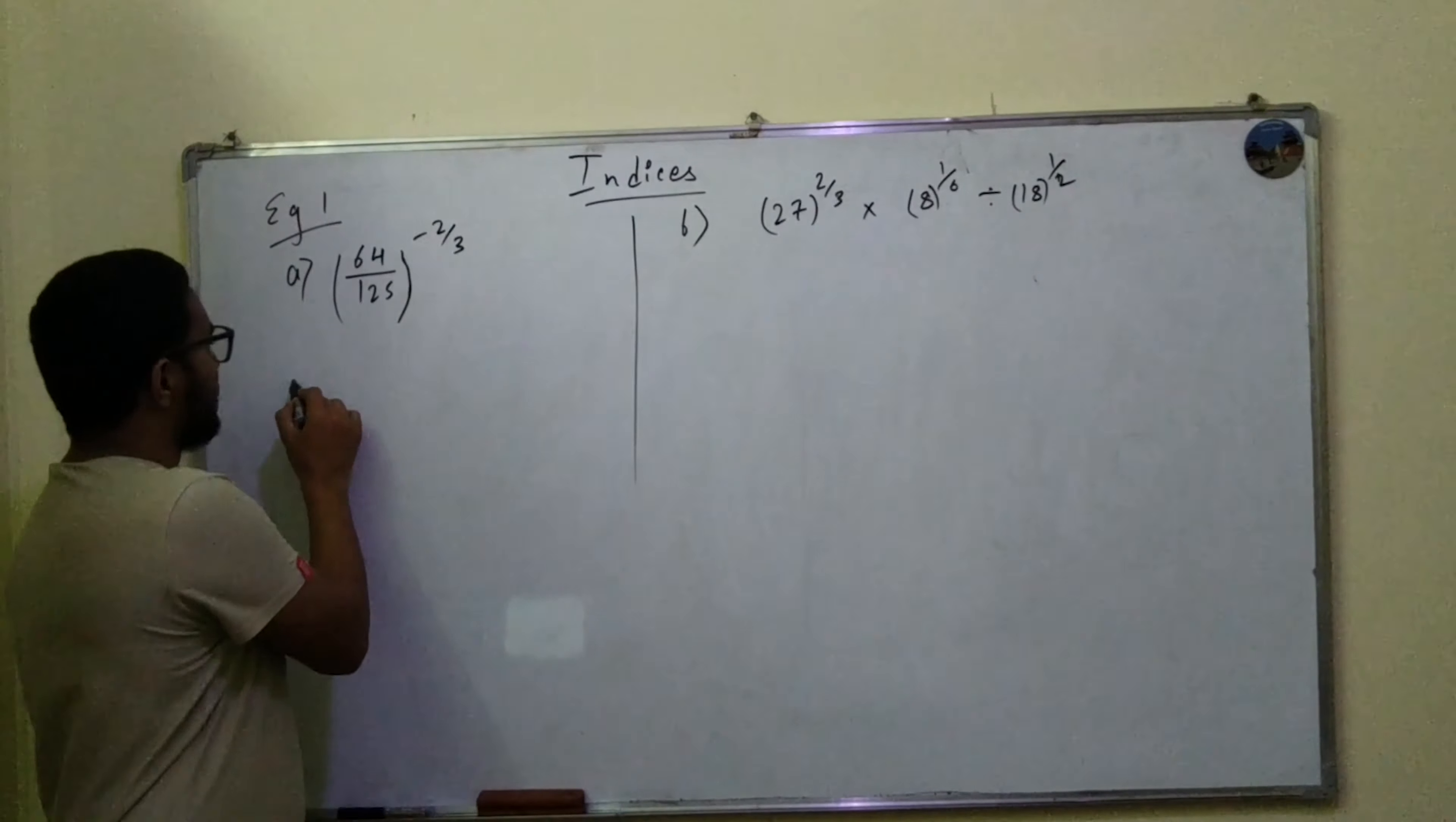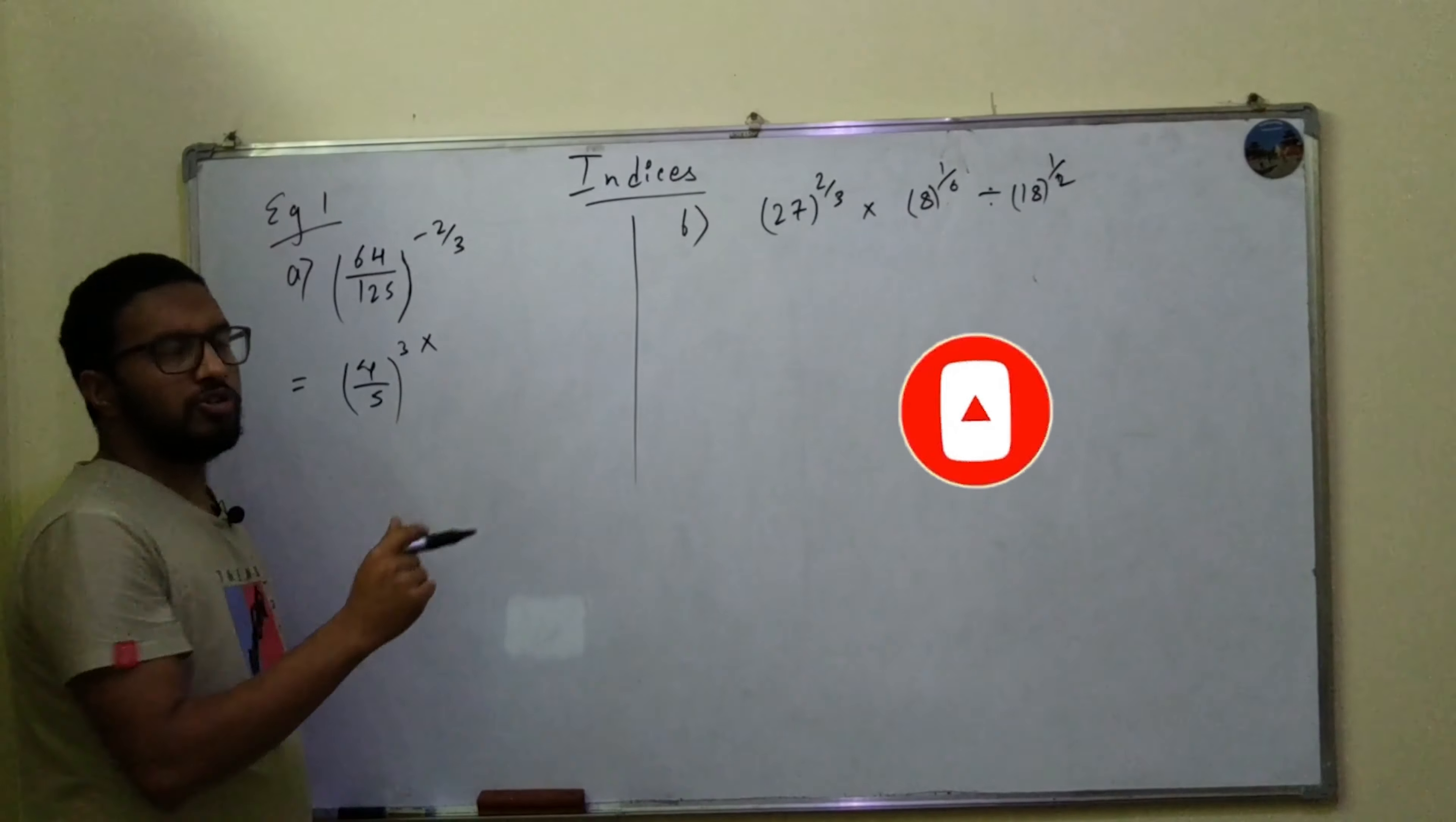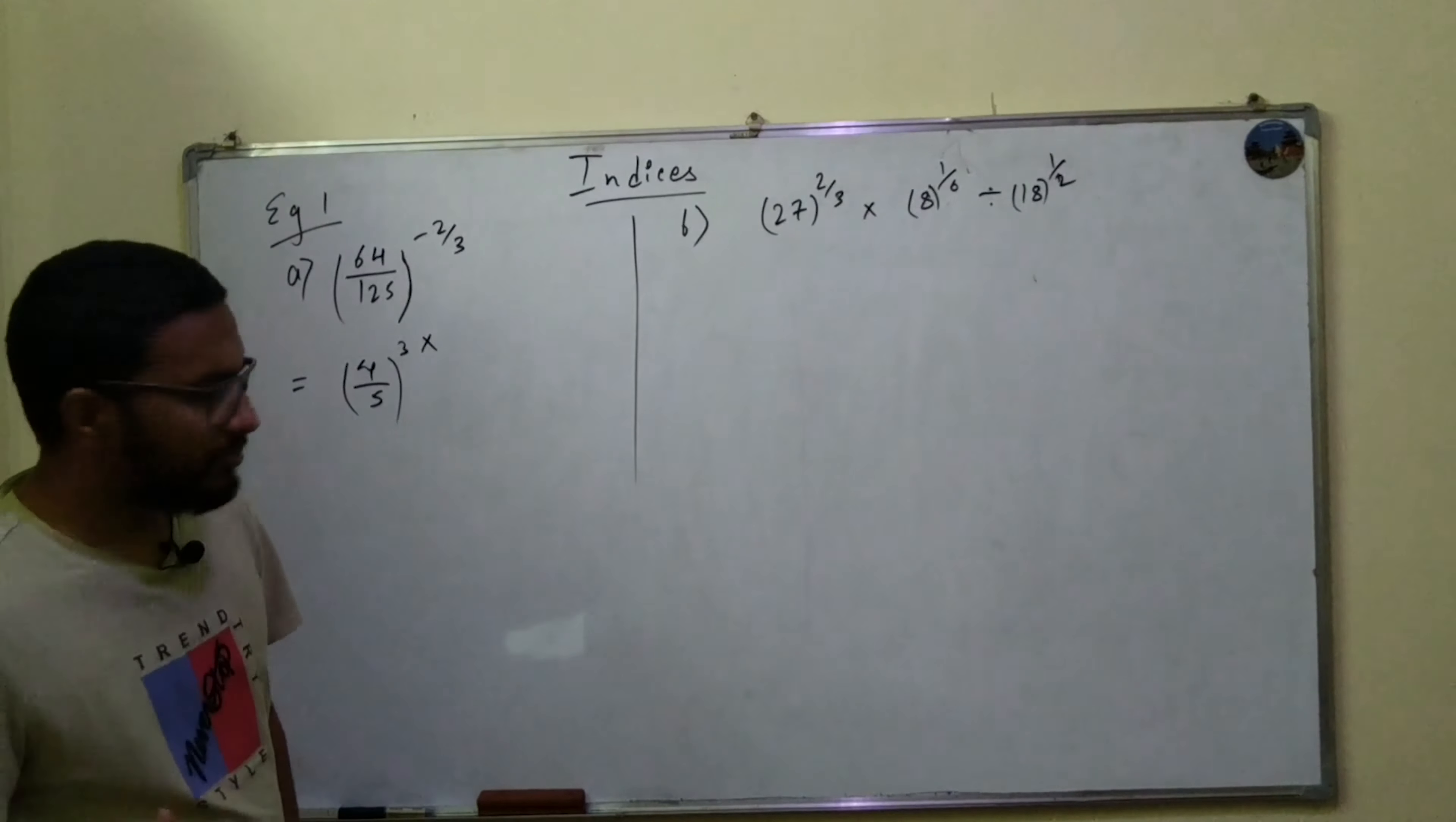We can write this in power form as (4/5)^3. I can write it in the form of cubes because this cube belongs to both of them. Or to make it easier, you can do 4^3/5^3.